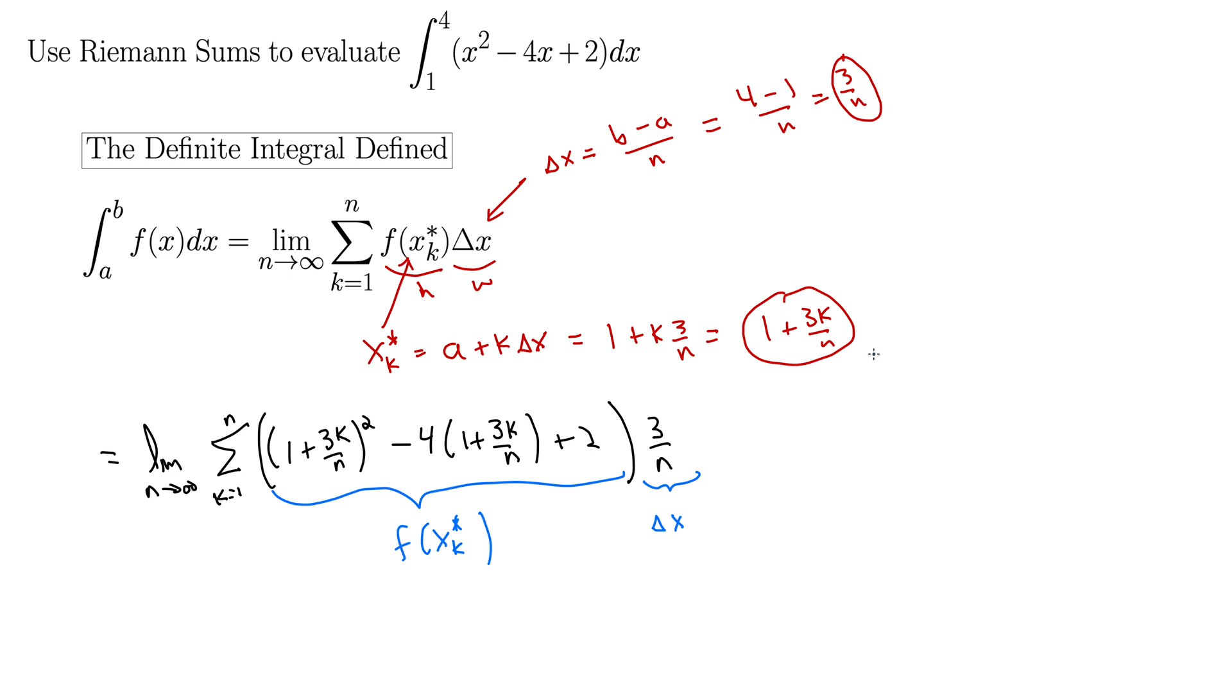Well, delta x, the only thing changing in this sum are the k's. The n inside this sum is actually a constant. It's just whatever this highest number is here. So anything with just an n in it, we can bring out to the front of the sum. Namely, this 3 over n will come out to the front of the sum, but the limit does have an n in it, so it can't just go out to the front of the limit.